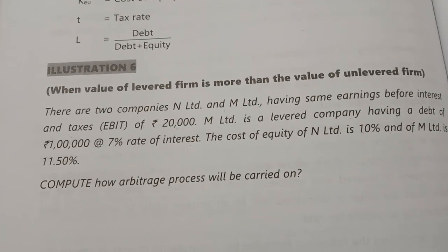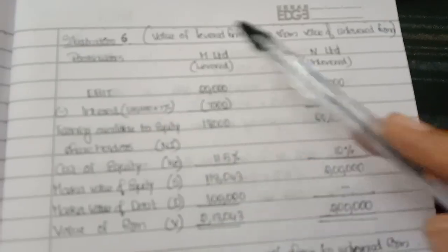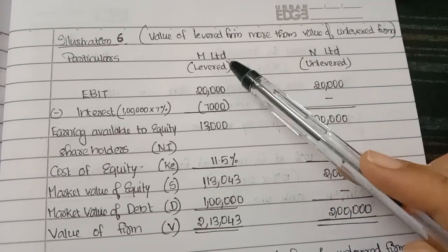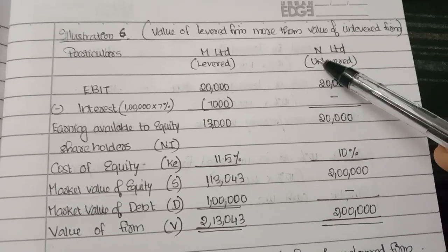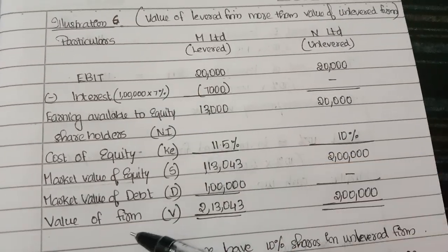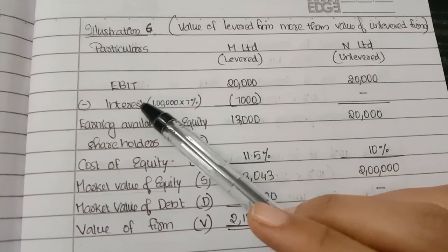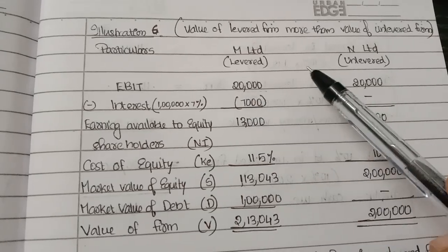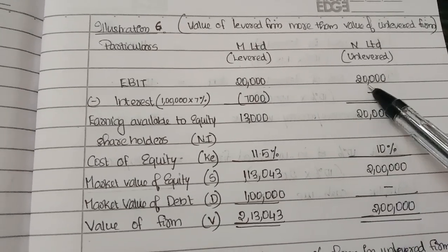Let's do the question. The particulars are set up for M Limited (the levered firm) and N Limited (the unlevered firm). We have to follow the same format in every question relating to this. First, let's write the EBIT. The EBIT of both M Limited and N Limited is 20,000 rupees.